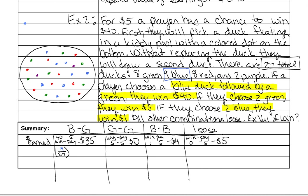So now what's the probability of choosing a green duck? There are 8 green ducks. Out of a total of how many? Well there were 27, but we took the blue one out, so if you count all of these dots there are now 26 of them. So that is the probability of going blue then green.